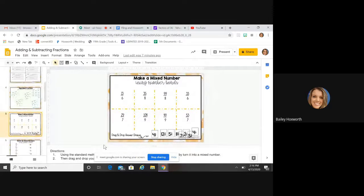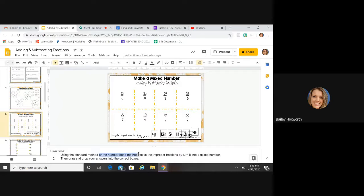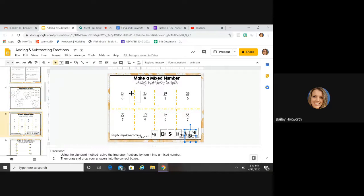Okay, so it says using the standard method, solve the improper fraction, turn to a mixed number. So all I need to do is divide. So say we did 13 over 6. Whatever your answer is, you're going to pick it up and drag it, and you're just going to stick it inside that box anywhere. Okay, I'm not saying these are correct answers, I'm just simply showing you how you're clicking, moving, and dragging.